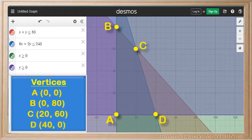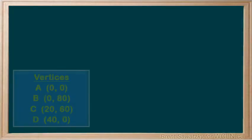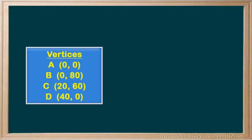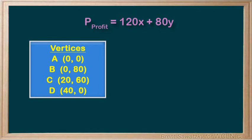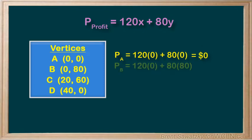Within our four points, we have our maximum and minimum profits. Taking our vertices and the profit equation we established, we can determine the profit at each point. Plugging in the numbers for point a, we get a profit of zero — that makes sense, she doesn't make any computers so she won't make any profit. The profit for point b, making all basic computers, plugging in those numbers, gives $6,400. Much better.